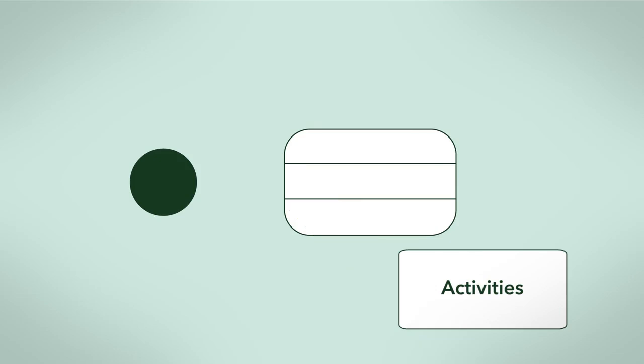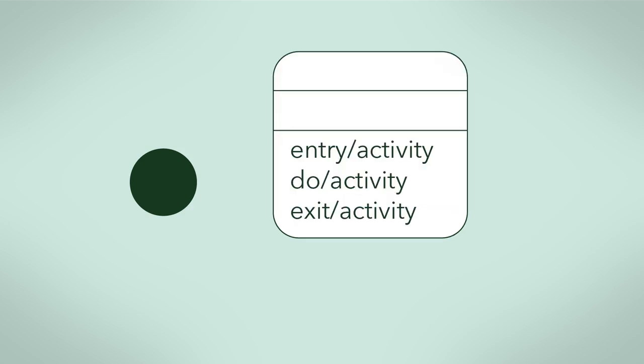Activities are actions that are performed when in a certain state, and they're displayed at the bottom. There are three types of activities for each state: entry, exit, and do.